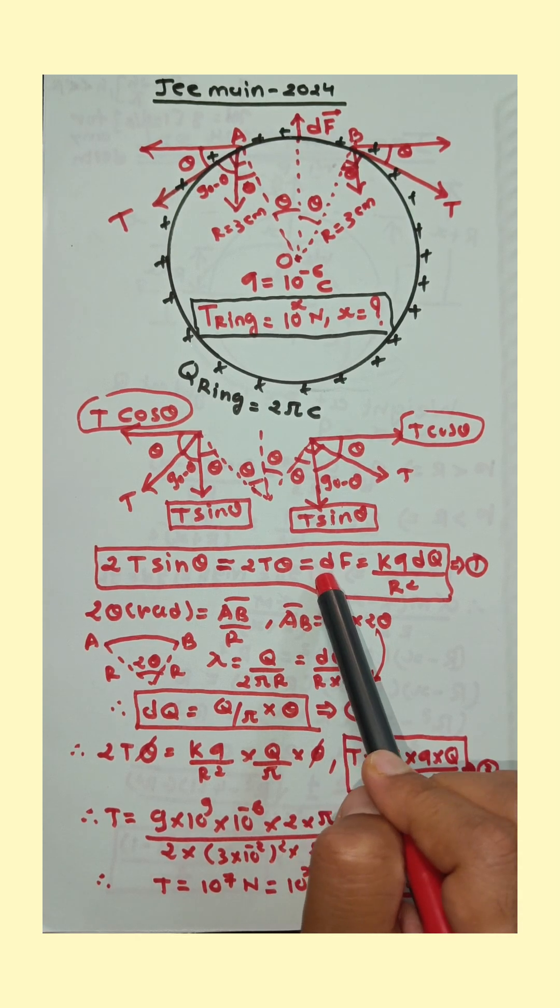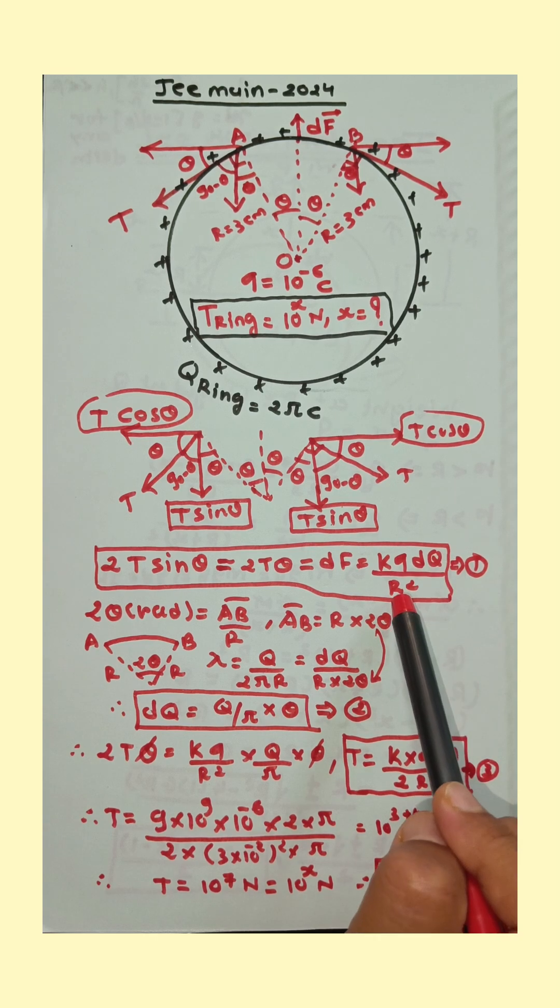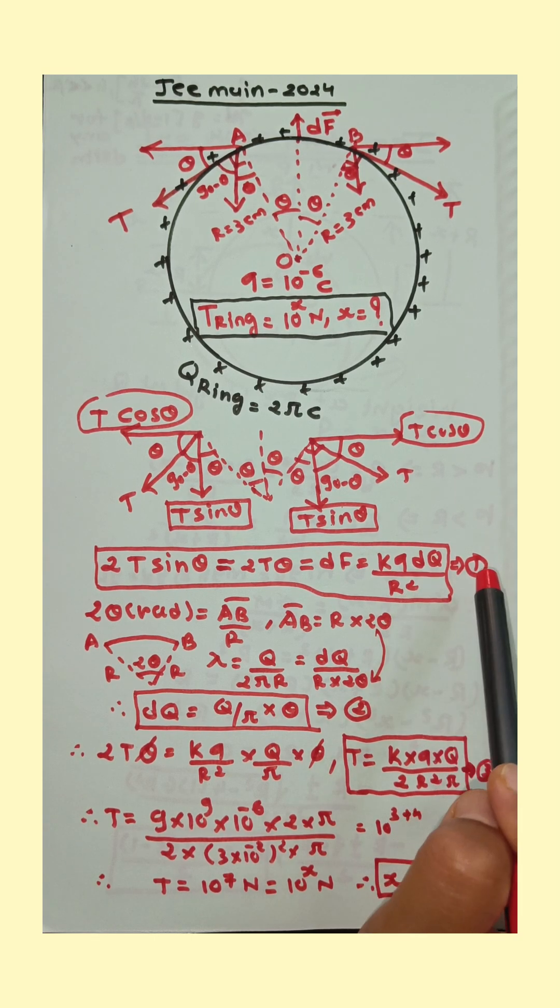df is equal to force of repulsion between q and dq. So k q dq upon square of the distance between q and dq. Equation number one.